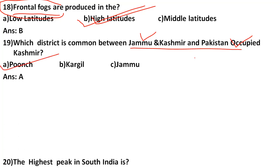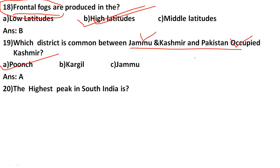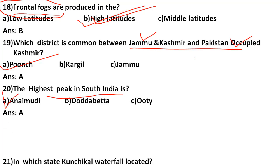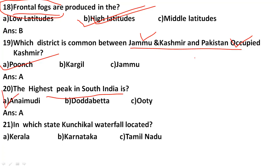What is the highest peak in South India? Options are: Anaimudi, Dodda Betta, Ooty. The correct answer is A, Anaimudi, which is the highest peak in South India.